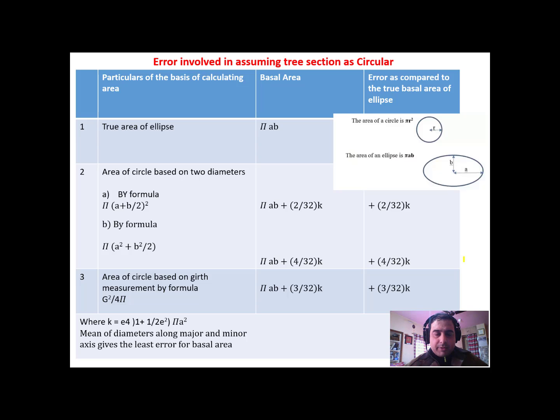Welcome back. In the previous lecture, we learned how to measure diameter at breast height or girth at breast height. Now, while taking those measurements, there are certain errors involved in assuming tree to be a circular section, which actually is not the case.